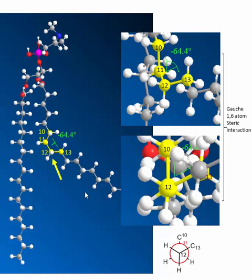Now if we take a membrane in the gel phase and move it to the liquid crystalline phase by heating it, what changes occur? The big change is that there are no hydrogen bonds to break between these long alkyl chains. Rather, we go from the more stable, lowest-energy form in which all bonds are staggered and the two C groups are anti to each other, and we make a gauche conformation.